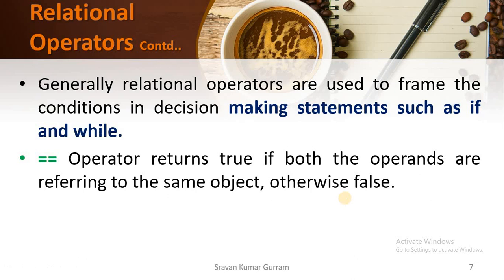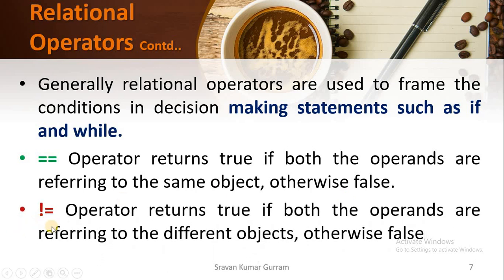We can compare objects with the == operator. If two objects refer to the same object, it returns true. The != operator returns true if both operands refer to different objects; otherwise it returns false.